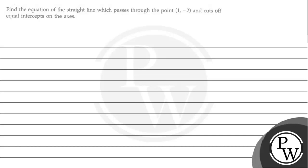Hello, let's read the question. The question says: find the equation of straight line which passes through point (1, -2) and cuts off equal intercepts on the axis.